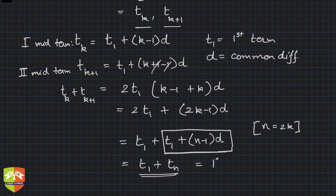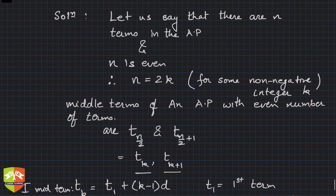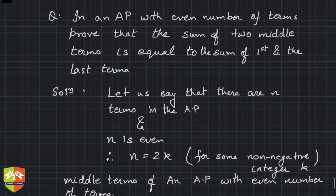This is nothing but the last term, so this is t_1 + t_n, which is equal to first term plus last term. So sum of the two middle terms is equal to first term plus last term. That is what this question was asking you to prove.